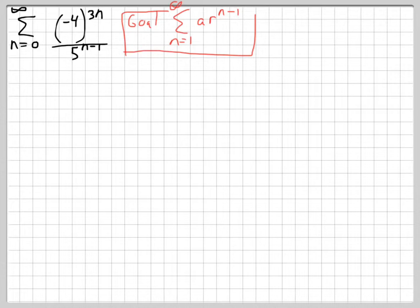The first problem we're going to encounter is how to handle this 3N up here. But we're going to notice a couple things. Just using the law of exponents we have negative 4 to the third power raised to the nth power. And that's the same thing, all we did was rearrange that multiplier there. And we have 5 to the n minus 1 on the bottom which doesn't look like it needs to be adjusted just yet.